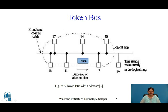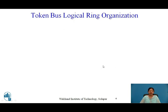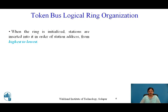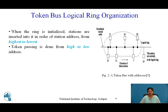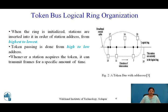The token circulates around the ring; its direction is fixed. When the ring is initialized, stations are inserted in order of station address from highest to lowest. So station 20 enters the ring first because it has the highest address. Token passing goes from high to low address. When the token enters the ring, it goes first to the highest priority station — station 20. When station 20 finishes its transmission, the token moves to station 17, which has the second highest priority.